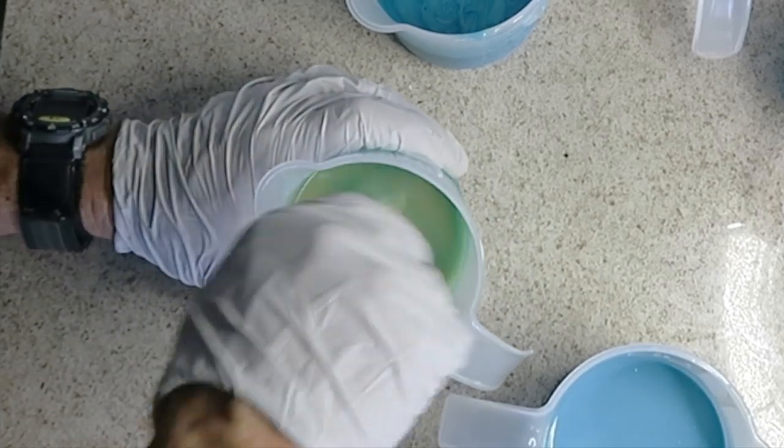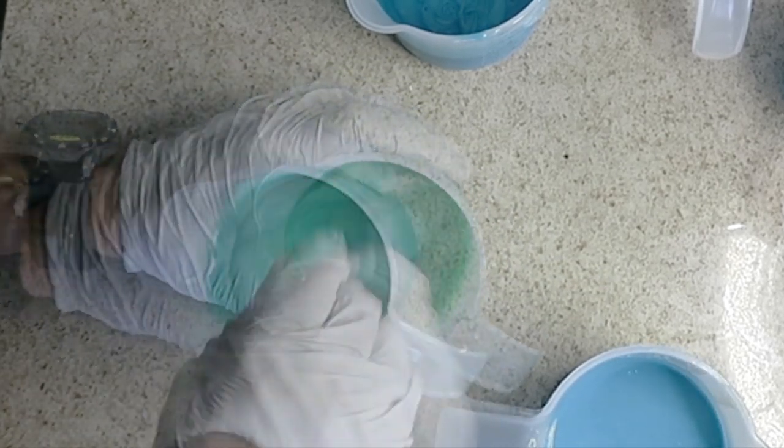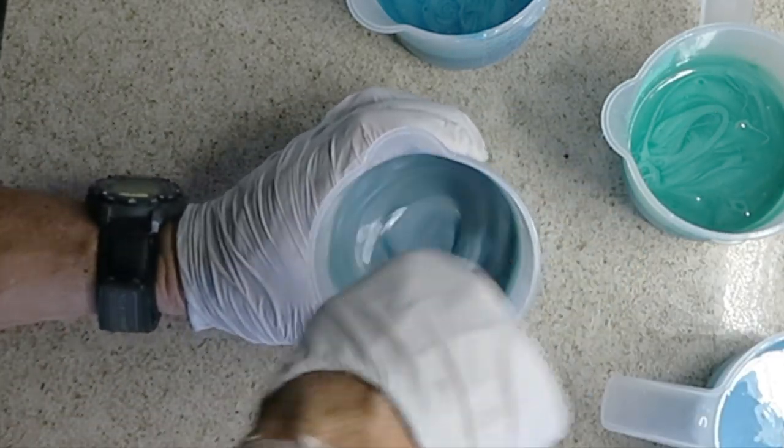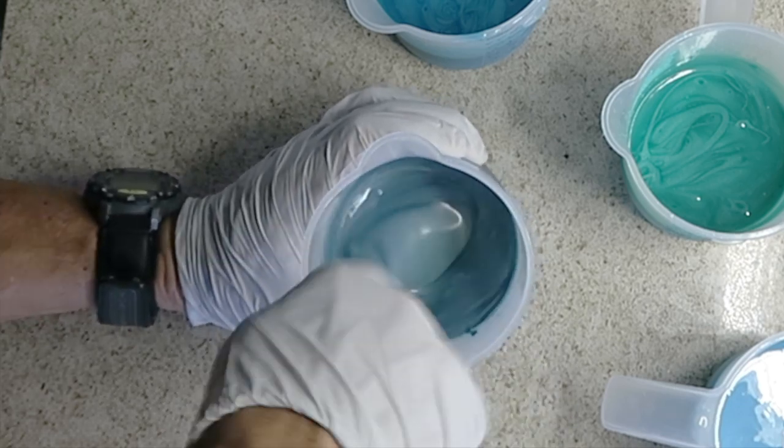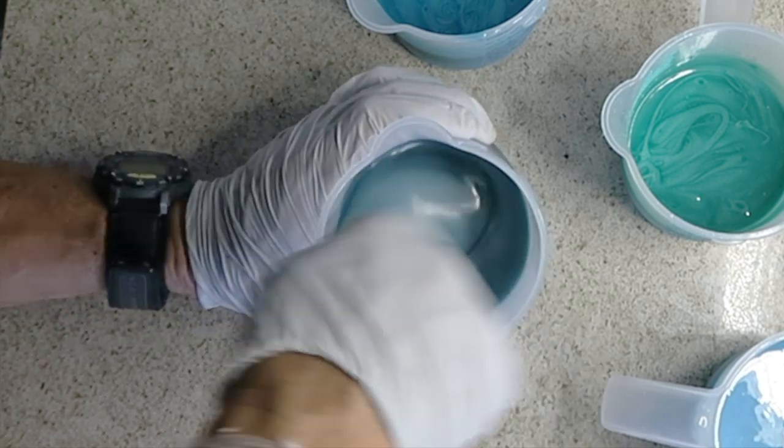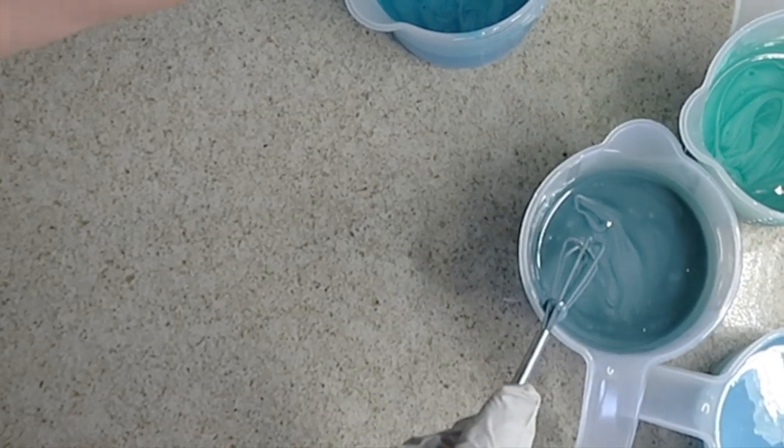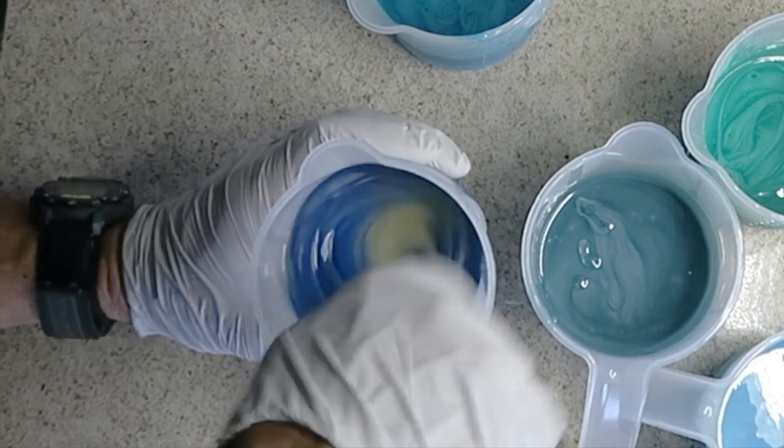Just make sure I have enough blue in there to counteract that yellow soap base. This one's called Caribbean Kiss. And this is that Cornflower Celebration, that gray blue mica that I really like, also from Rustic Essentials. Then my Klein Blue.